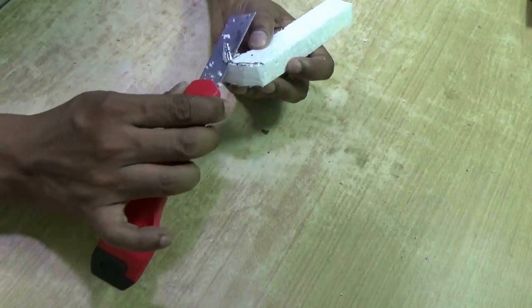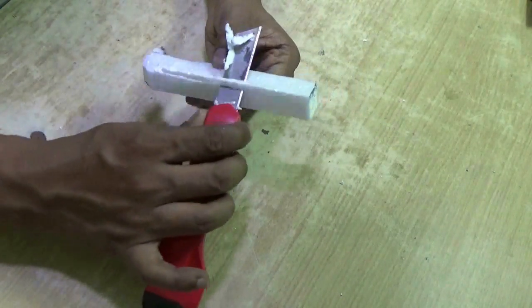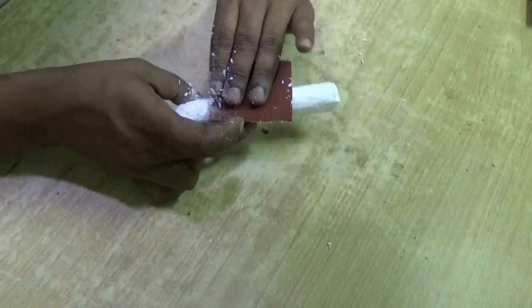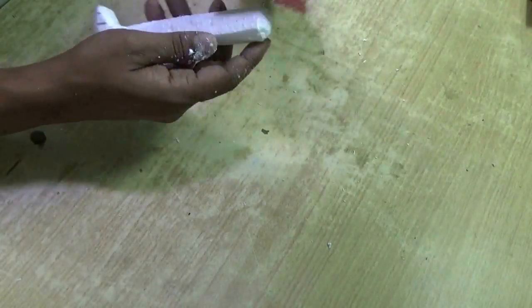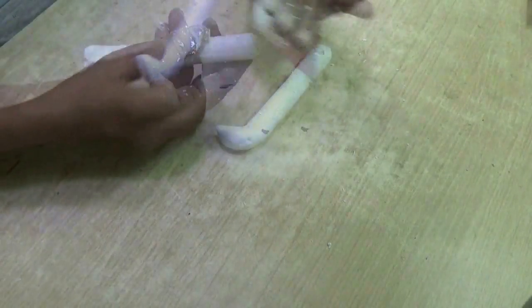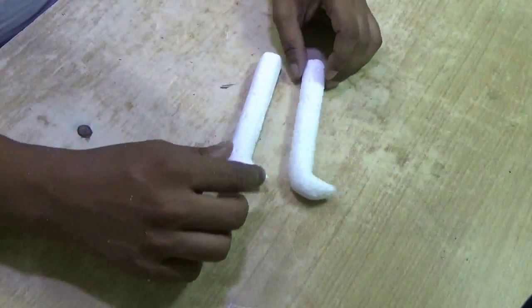Cut the corners to give it a curved shape and then wrap it with sandpaper to smooth the surface. Thus I have two floats ready.